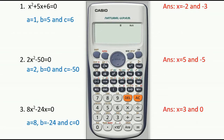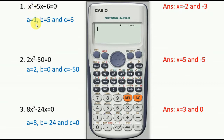First of all, you have to identify what a, b, and c are. The equation x² + 5x + 6 = 0 is in the form of ax² + bx + c = 0. So a is the coefficient of x², which is 1; b is the coefficient of x, which is 5; and c is the constant term, which is 6.